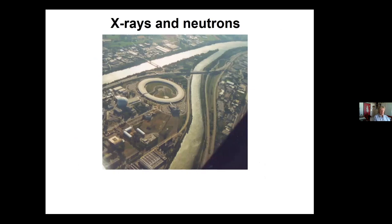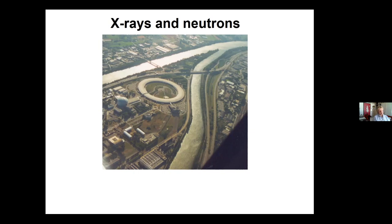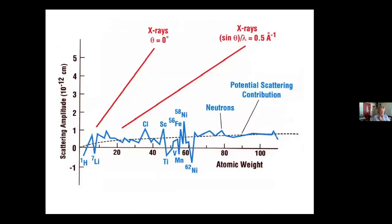X-rays and neutrons - this is an old slide. That's the ILL, EMBL, the synchrotron and so on. Here's the scattering summary. If you think of the X-ray atomic scattering factor versus the neutron scattering length: in the X-ray case, as you go up in atomic weight, your scattering amplitude goes up as well. At the extreme end, hydrogen is practically invisible, all the way up to higher atomic weights where everything scatters strongly.